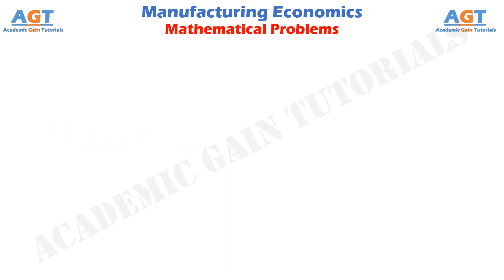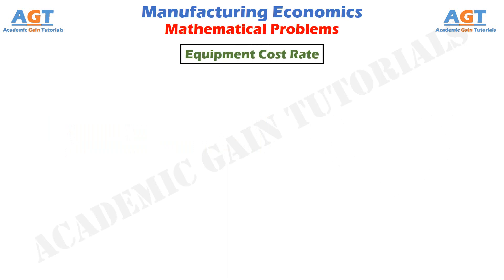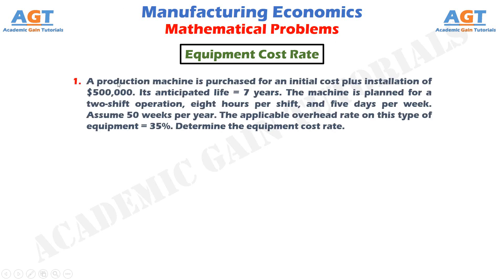Problem 1. Let's see a mathematical problem on equipment cost rate. The question states: a production machine is purchased for an initial cost plus installation of $500,000. Its anticipated life equals 7 years. The machine is planned for a 2-shift operation, 8 hours per shift, and 5 days per week. Assume 50 weeks per year. The applicable overhead rate on this type of equipment equals 35%. We have to determine the equipment cost rate.